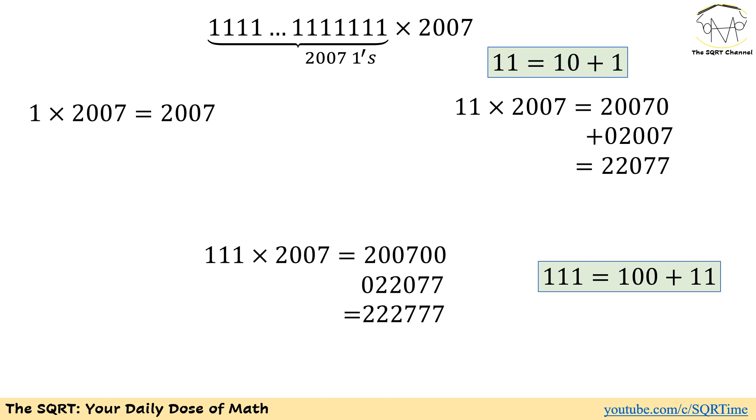Now let's move on. Let's start with 111 times 2007. Here we have 3 ones in the original problem. We can write 111 as 100 plus 11. We already multiplied 11 by 2007 in the previous case, and we're going to add that to 100 times 2007.